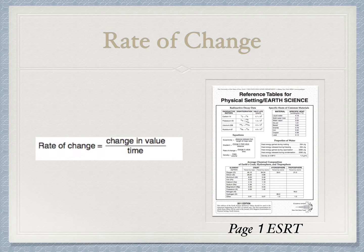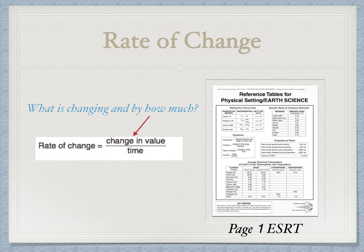The Rate of Change formula is one you're going to encounter a lot in your earth science units, and there's going to be a variety of questions applied to the same formula. On the first page of your reference table is this formula. The rate of change is asking the change in value — meaning what is changing and by how much — and you're dividing that change by whatever time it took for the change to take place.